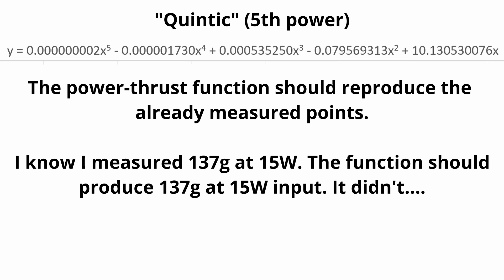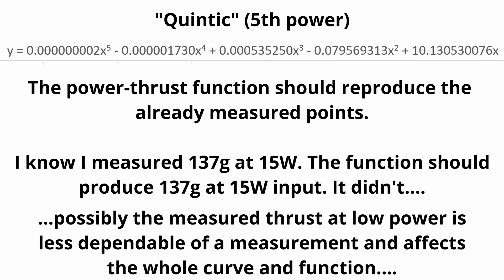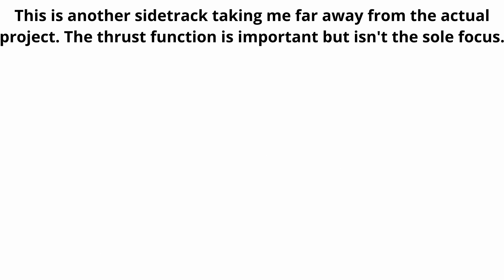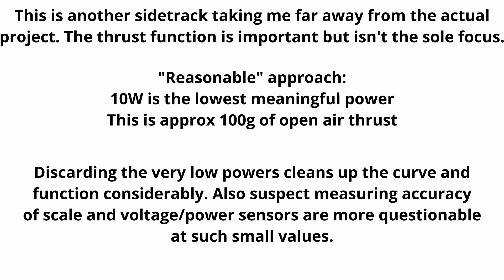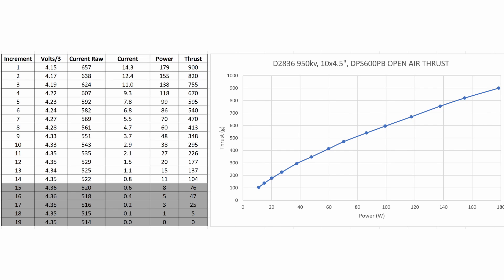And then you get into — well, who's to say the thrust measurement is correct? In order to keep some sort of sanity, what I done was declare 10 watts as being my lowest meaningful power, which equates to roughly 100 grams of thrust quite neatly. For some of my future measuring on these hovercraft I may have to drop it to even 8 watts or less, which corresponds to roughly 70 grams open air thrust. But right now I'm taking 10–11 watts as the minimum.